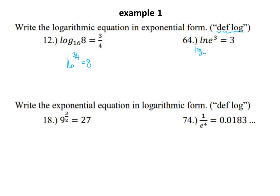For example 64: LN is log base e of e to the third, and that equals three. You've got a logarithm with base e and inside is an exponential base e — there's cancellation right there. Inverses and deflog confirm this: the base is e, the perfect exponent is three to create the argument e to the third, so the logarithm equals three. It doesn't get any easier than that.